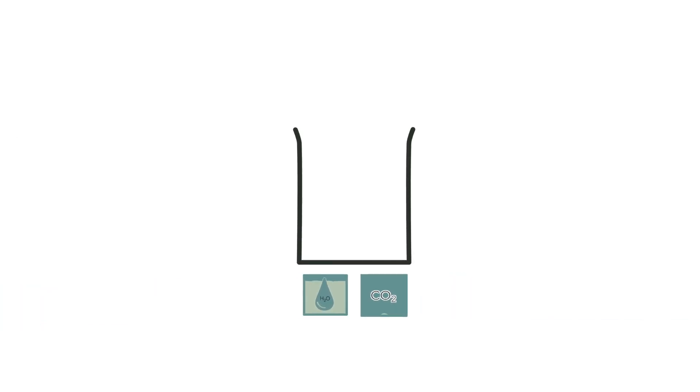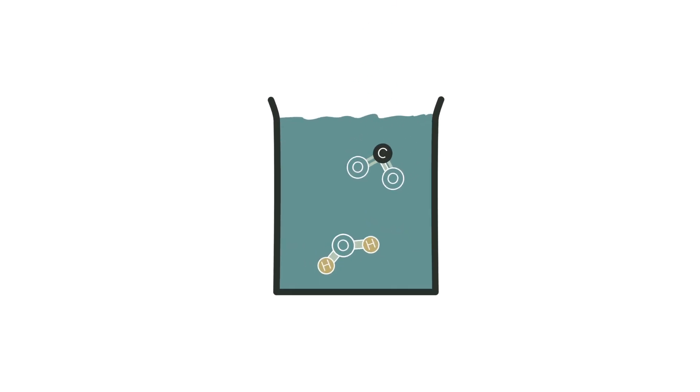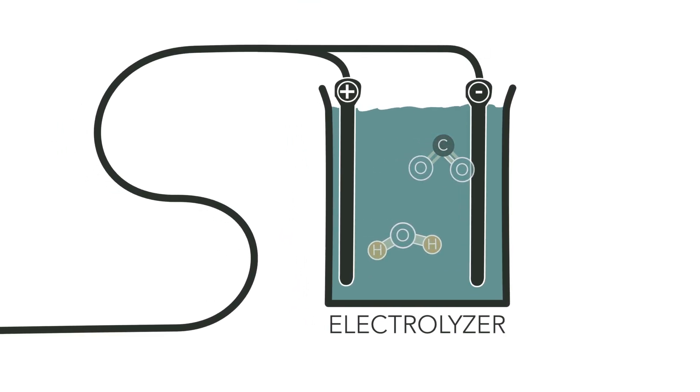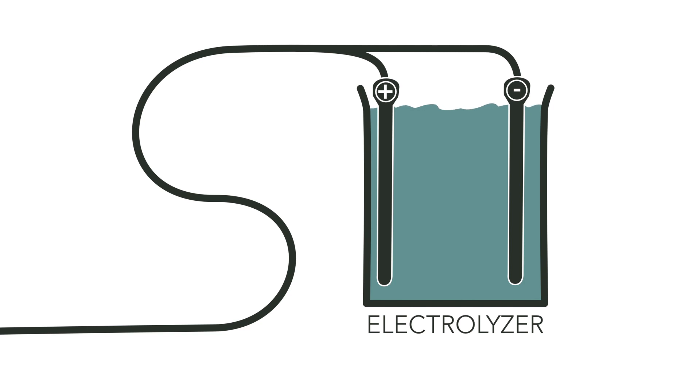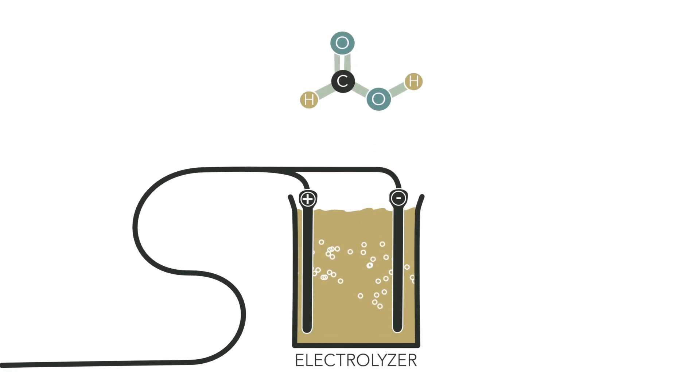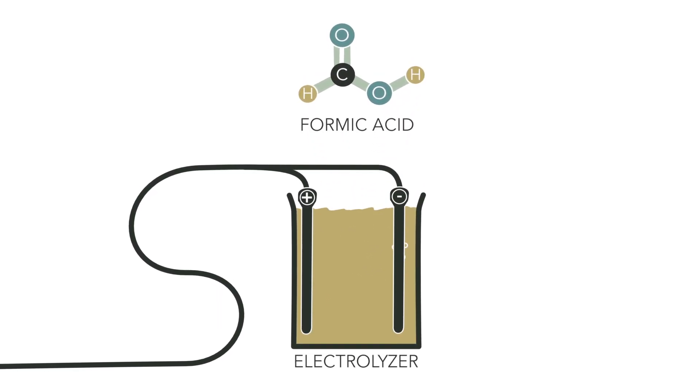In the first step, CO2 and water are put into a so-called electrolyzer, a vessel with electrodes. Inducing electric power leads to a chemical reaction. Water and CO2 become one, creating an acid usually found in ants, the so-called formic acid.